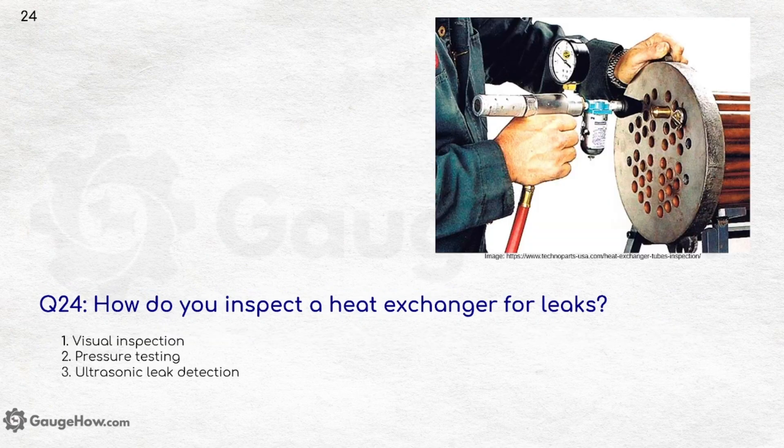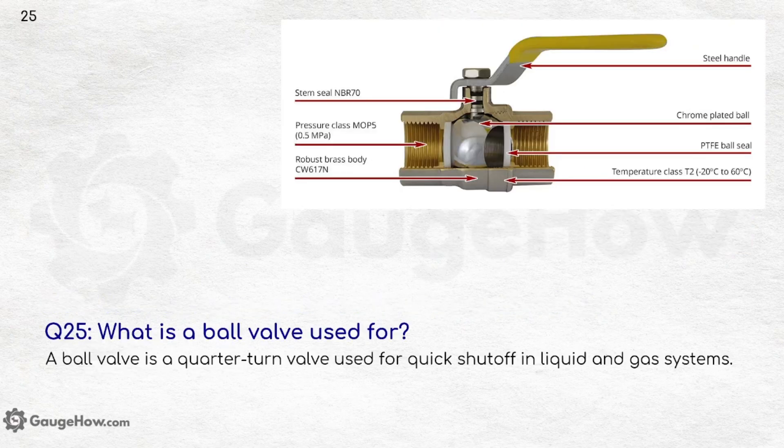How do you inspect a heat exchanger for leaks? Visual inspection, pressure testing, or ultrasonic leak detection — with ultrasonic leak detection being the most advanced. What is a ball valve used for? A ball valve is a quarter-turn valve used for quick shut-off in liquid and gas systems.